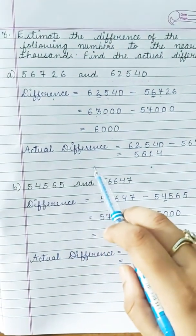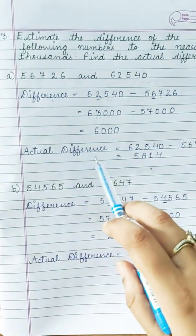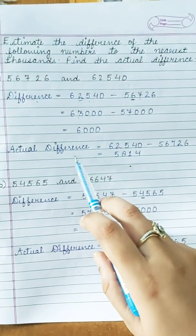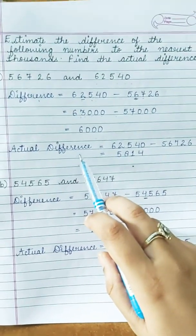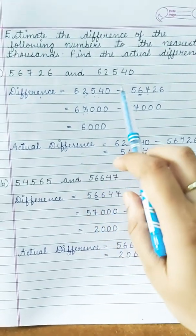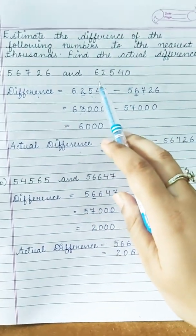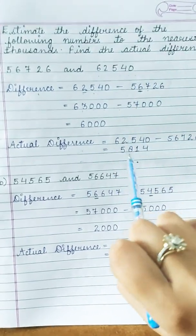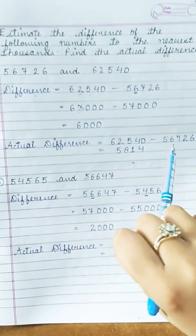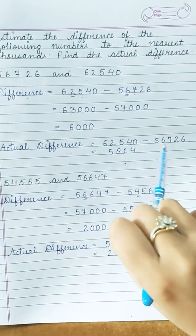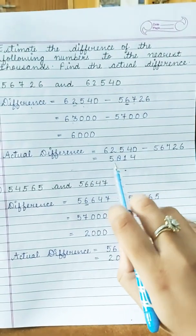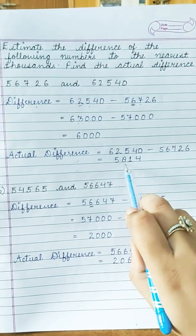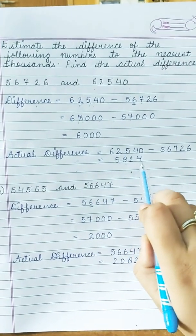Now finding the actual difference. Subtract normally: 62540 minus 56726. The answer will be 5,814.